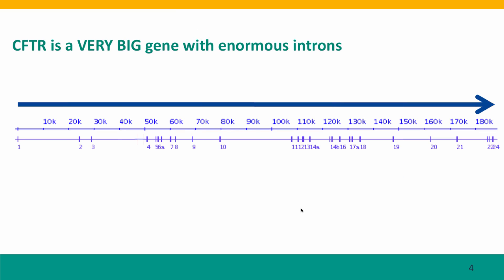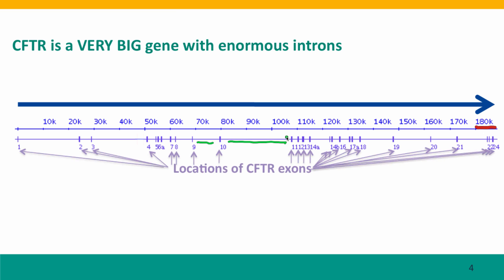This is a very big gene. You can see here it's 180,000 base pairs long. Now, that doesn't all code for protein — most of the gene is in fact introns. All of these long thin lines represent intronic parts of the gene. Only the small vertical lines are the exons, and their thickness is proportional to their length relative to the length of the whole protein.